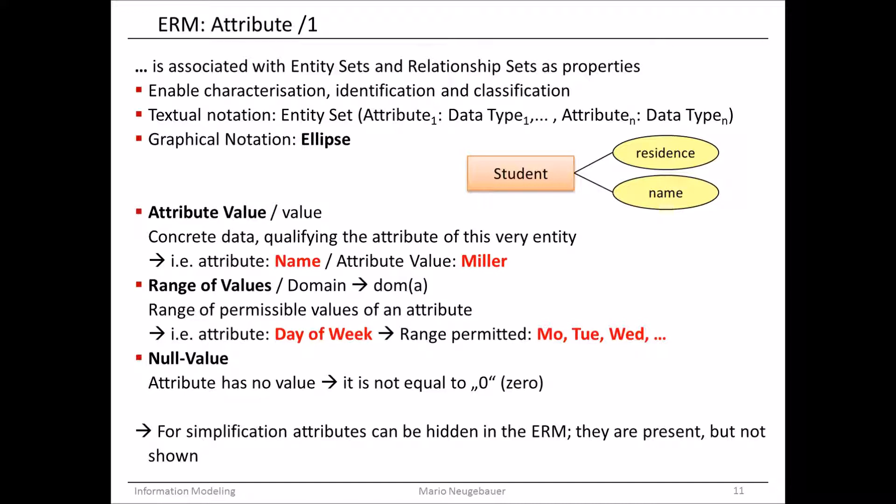When we design the database, we also have to think about the range of values — the so-called domain. This means we want to allow a certain range of values and might not allow everything to be typed in. For example, for the date of birth, we would not allow letters; we would only allow numbers in the form of a date. Or for the day of the week, we have a range which permits only Monday, Tuesday, Wednesday, and so on.